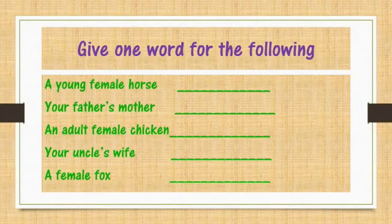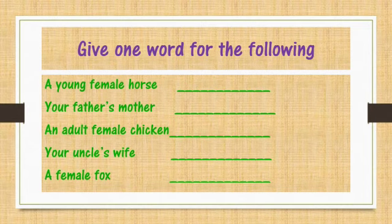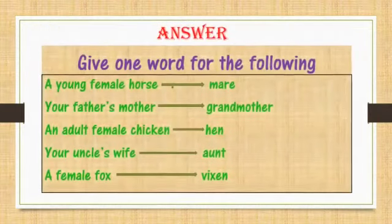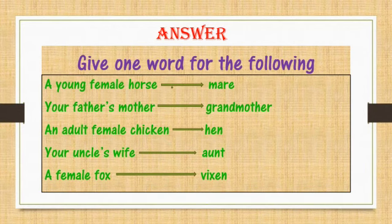Give one word for the following: A young female horse — Mare. Your father's mother — Grandmother. An adult female chicken — Hen. Your uncle's wife — Aunt. A female fox — Vixen.